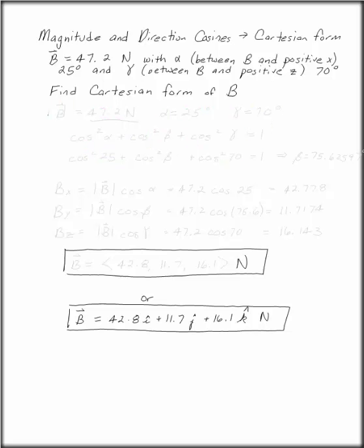Magnitude and Direction Cosines into Cartesian form in three dimensions. Start with vector B. It's 47.2 Newtons with alpha between B and the positive x-axis of 25 degrees, and gamma between B and the positive z-axis of 70 degrees.